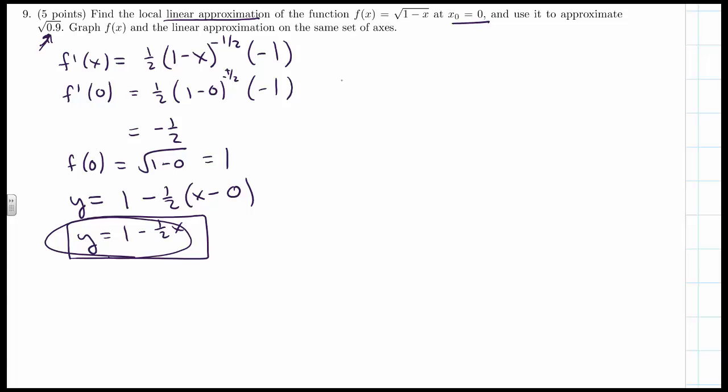To get to that value, the square root of 0.9 is equivalent to the value of F at 0.1. So that's going to be our approximation.